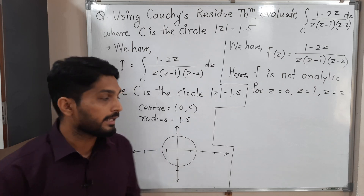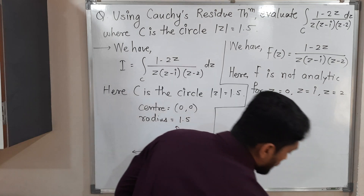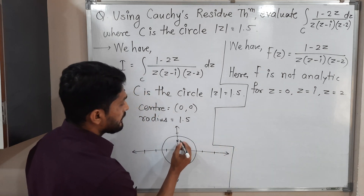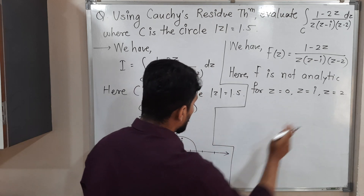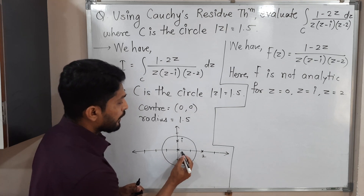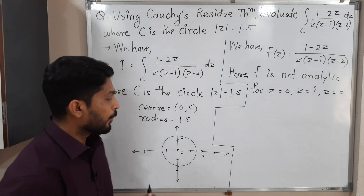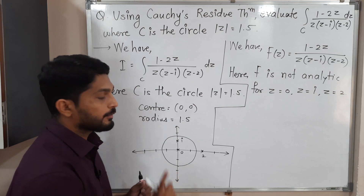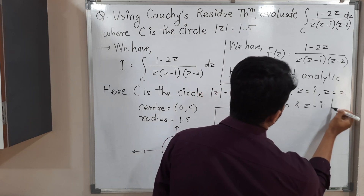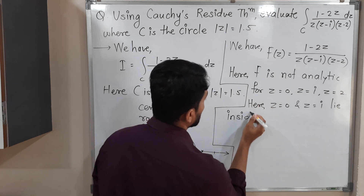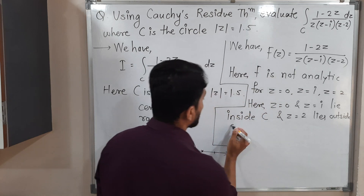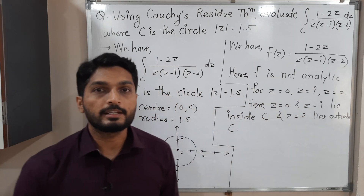The next task is to check whether those points lie inside or outside the circle. z equal to 0 is at the center, so it lies inside. z equal to i lies inside the circle. z equal to 2 lies outside the circle. So z equal to 0 and z equal to i lie inside C, and z equal to 2 lies outside C. We have to find residues only at z equal to 0 and z equal to i.